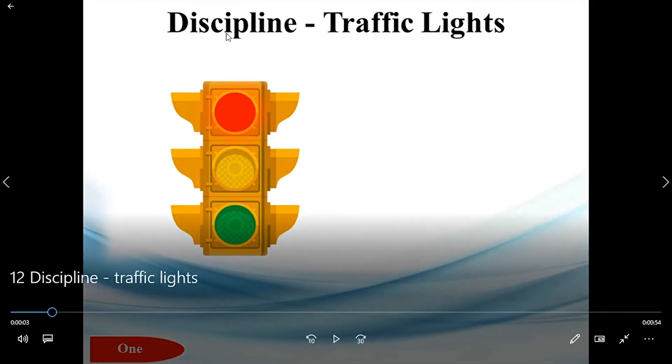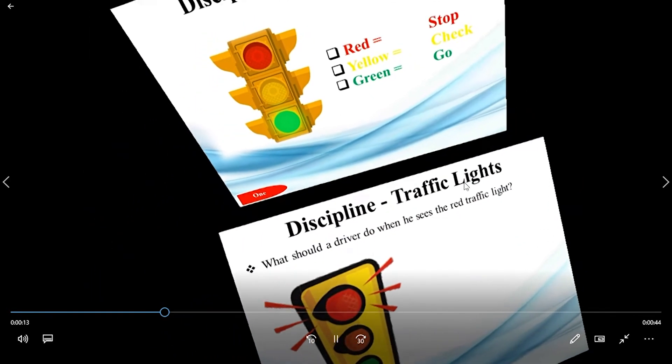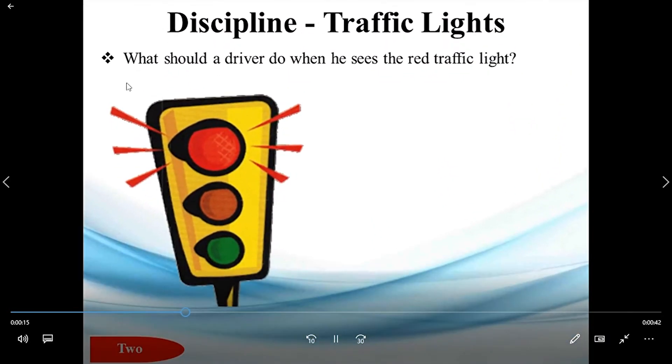Hello everyone, so today let us learn about discipline in traffic lights. Red light indicates to stop, yellow light indicates to check, and green light indicates to go. What should a driver do when he sees the red traffic light?